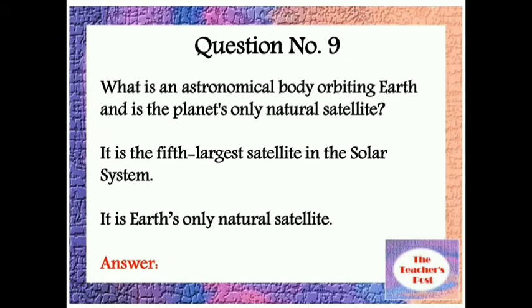Question number nine: What is an astronomical body orbiting Earth and is the planet's only natural satellite? It is the Earth's only natural satellite. It is the fifth largest satellite in the solar system.